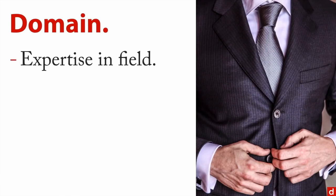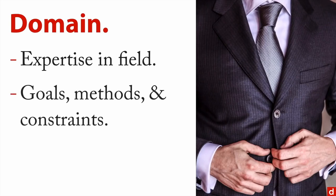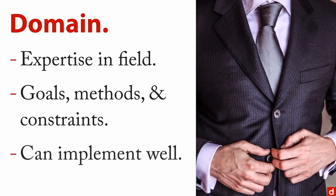The third element of the data science Venn diagram is domain expertise — expertise in the field you're in. Business settings are common; you need to know the goals, the methods used, and the constraints people face. It's important because whatever your results are, you need to be able to implement them. Data science is very practical and designed to accomplish something, and domain familiarity makes your results more impactful.